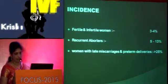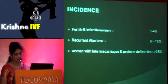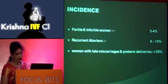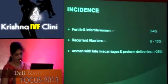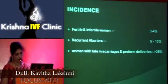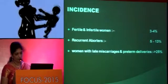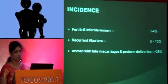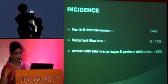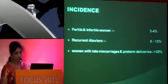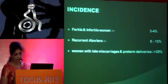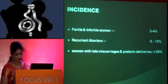Due to non-standardization of the classification system and non-uniform diagnostic modalities in different study populations, there are irregularities in the incidence and prevalence of Mullerian duct anomalies. In the general population of fertile and infertile women, it is 3–4%; in recurrent aborters, it is 5–13%; and in women with late miscarriages and preterm deliveries, it is increased to more than 25%.